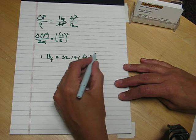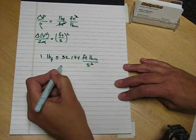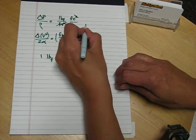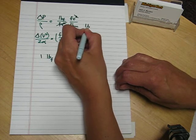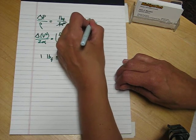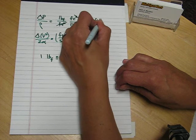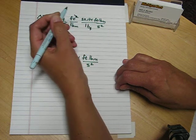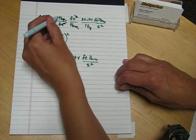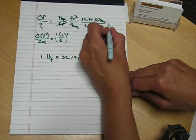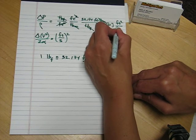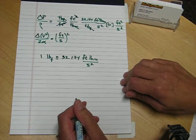This definition can be used as a unit conversion to get rid of this pound force. I can say one pound force is equal to 32.174 foot pound mass per second squared. Now I have units of feet squared per second squared, and the unit issue is resolved.